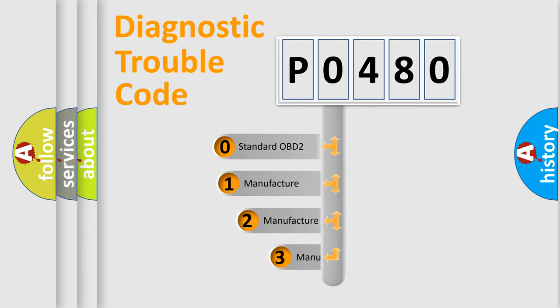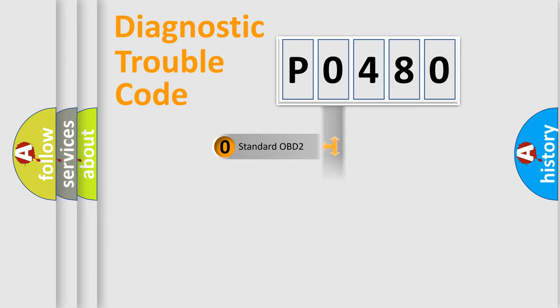If the second character is expressed as zero, it is a standardized error. In the case of numbers 1, 2, 3, it is a manufacturer-specific expression of the car error.